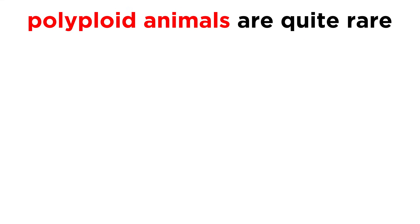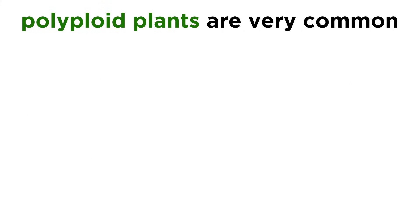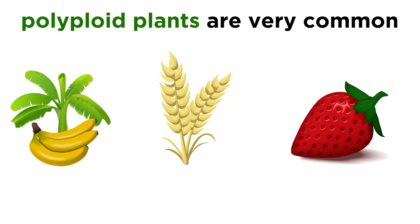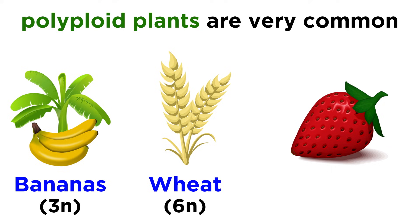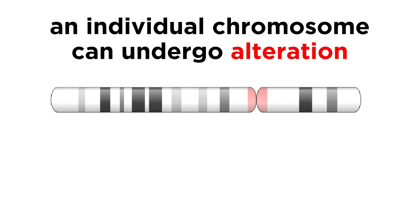Polyploid animals are quite rare, although a handful of polyploid fishes and amphibians do exist. However, polyploid plants are quite common, particularly ones we eat. Bananas are triploid, wheat is hexaploid, or 6N, and strawberries are octaploid, or 8N, meaning eight complete sets of chromosomes in each cell.